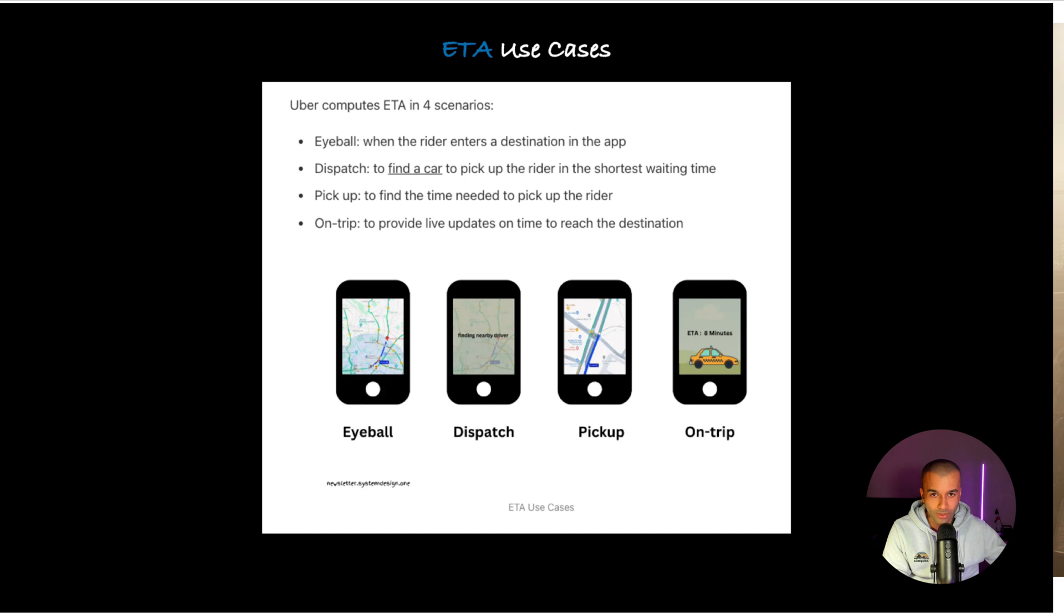Here are the ETA use cases. There are essentially four scenarios in which Uber would compute ETA. The first one is eyeballing when the rider enters in the destination for the first time in their app. Uber will calculate ETA, and once they dispatch or if the car picks you up, the ETA changes drastically.